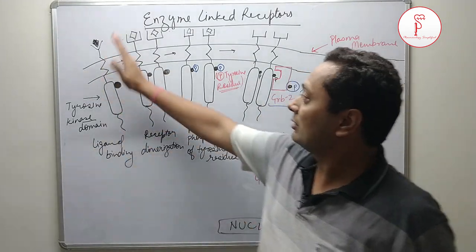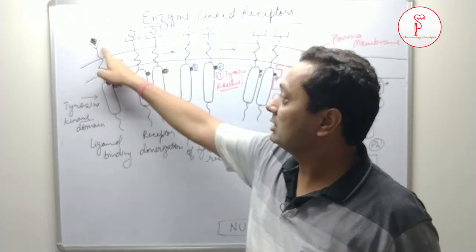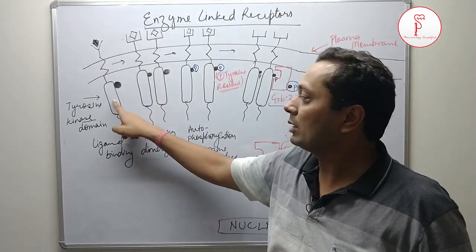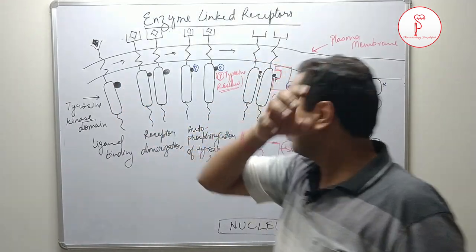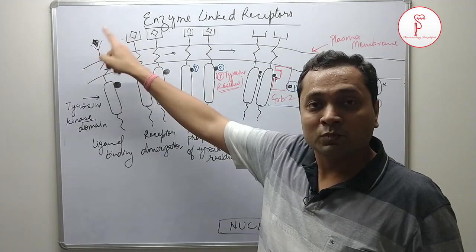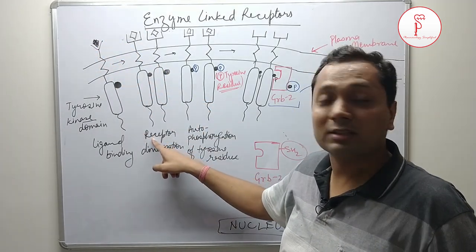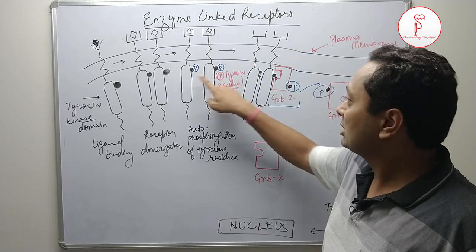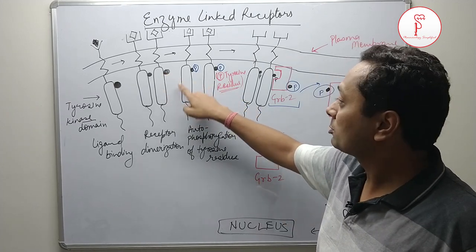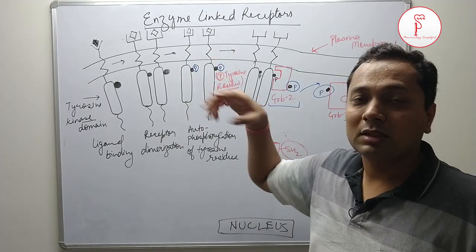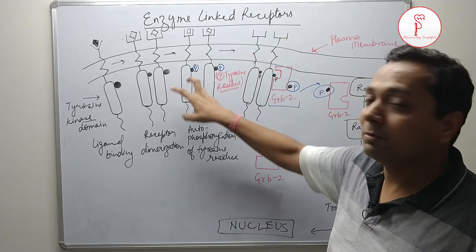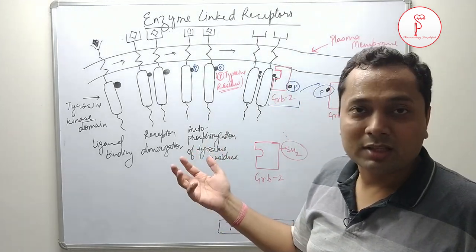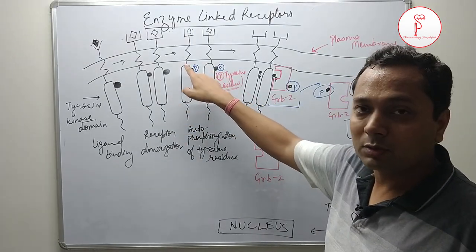To summarize: this is our receptor. The extracellular domain offers a ligand binding site. Then there is the transmembrane alpha helix. Then the tyrosine kinase domain with the tyrosine residue. Whenever the ligand binds to the receptor, there is receptor dimerization. When the receptor dimerizes, it leads to autophosphorylation of the tyrosine residue. These receptors have intrinsic tyrosine kinase activity — they do not require any other protein to activate these tyrosine residues.